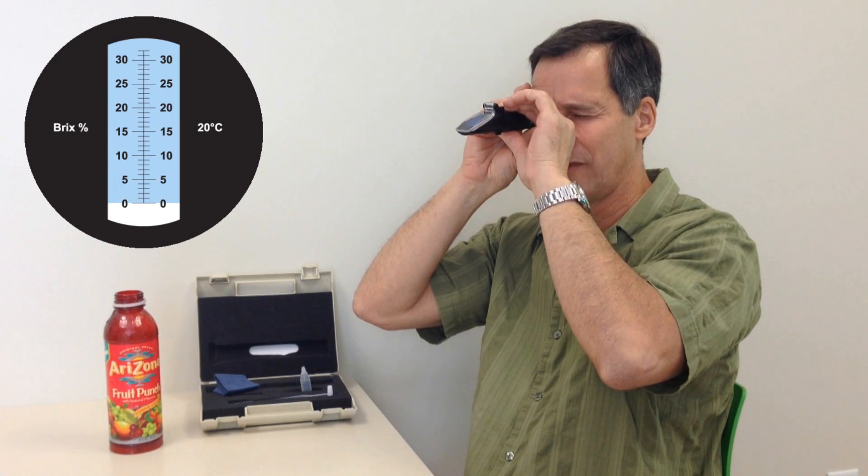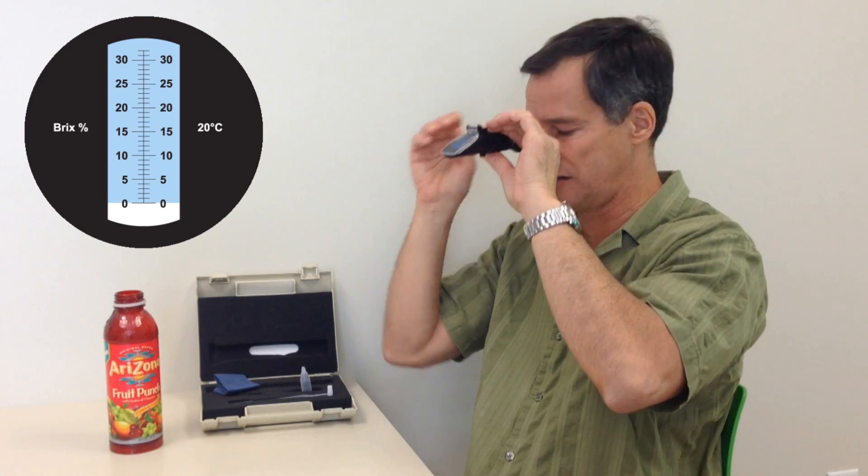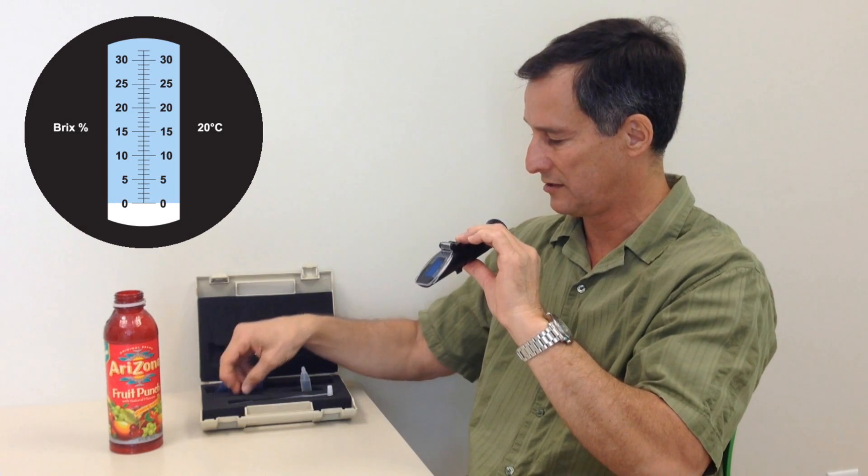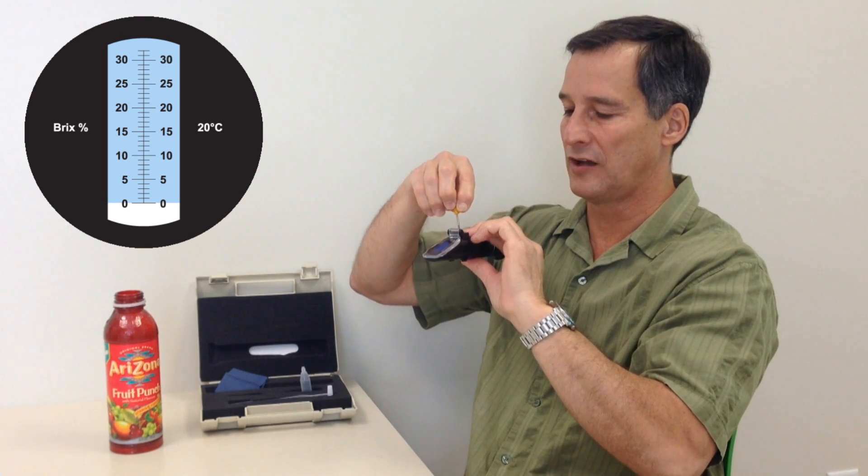I need to have the divider between the blue and white fields on zero, since we're dealing with distilled water, which has no sugar in it, no dissolved solids.